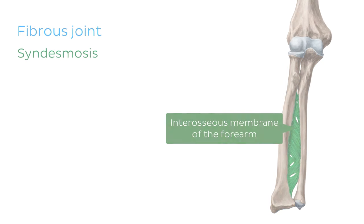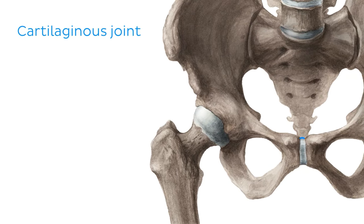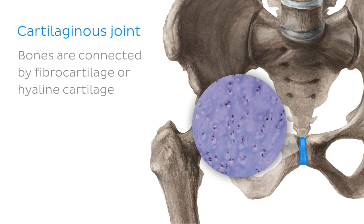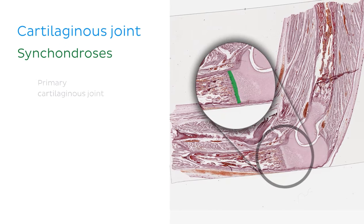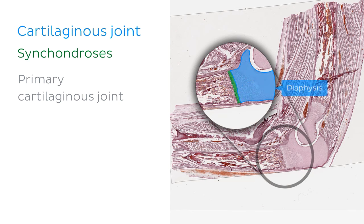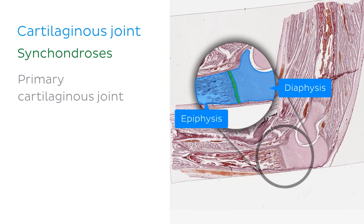The last type of joint we're going to talk about is the cartilaginous joint. In a cartilaginous joint, the bones are connected by fibrocartilage or hyaline cartilage. These joints can be subclassified into two types: synchondroses and symphyses. A synchondrosis, or primary cartilaginous joint, is where the bones are connected by hyaline cartilage. In a histological image, we can see that this type of joint is found between the diaphysis and the epiphysis of a growing long bone, and will eventually become completely ossified in adulthood.